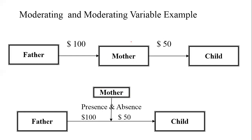In the first example, she is acting as a mediator because she is being affected by the father and in return she is affecting the child. But in the second example, the presence or absence of the mother changes the relationship between father and child. This is a simple example to understand the difference between mediation and moderation.